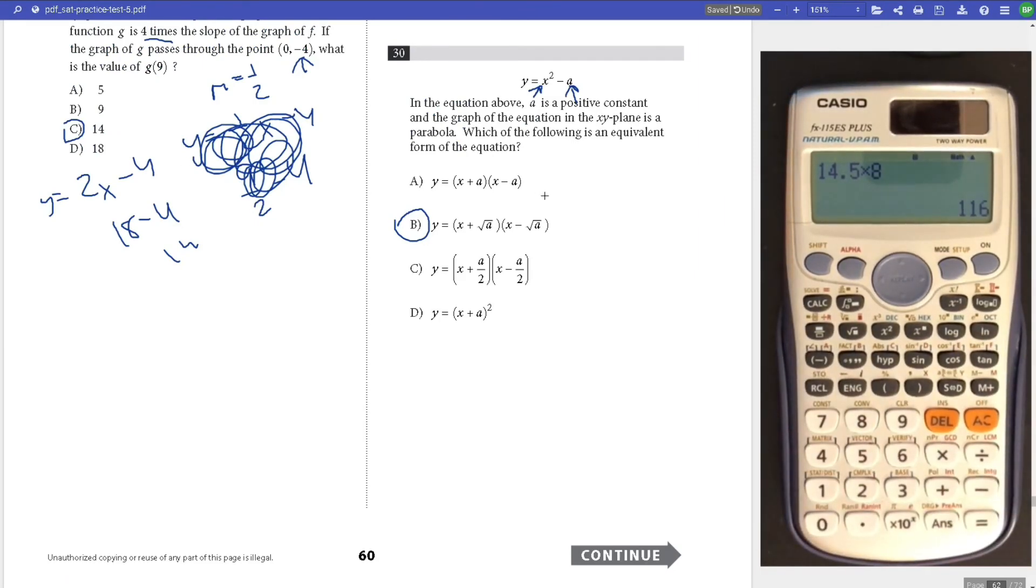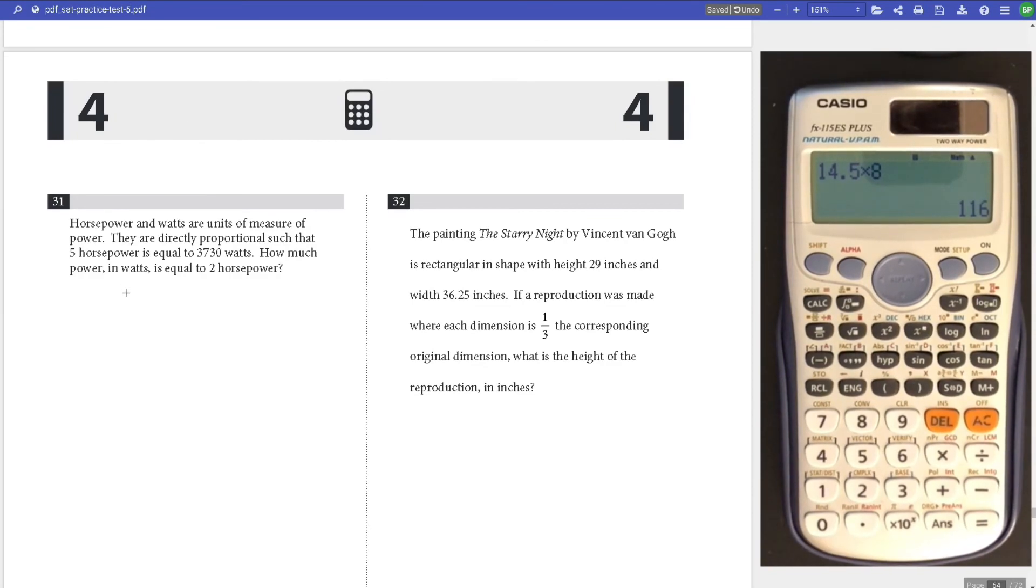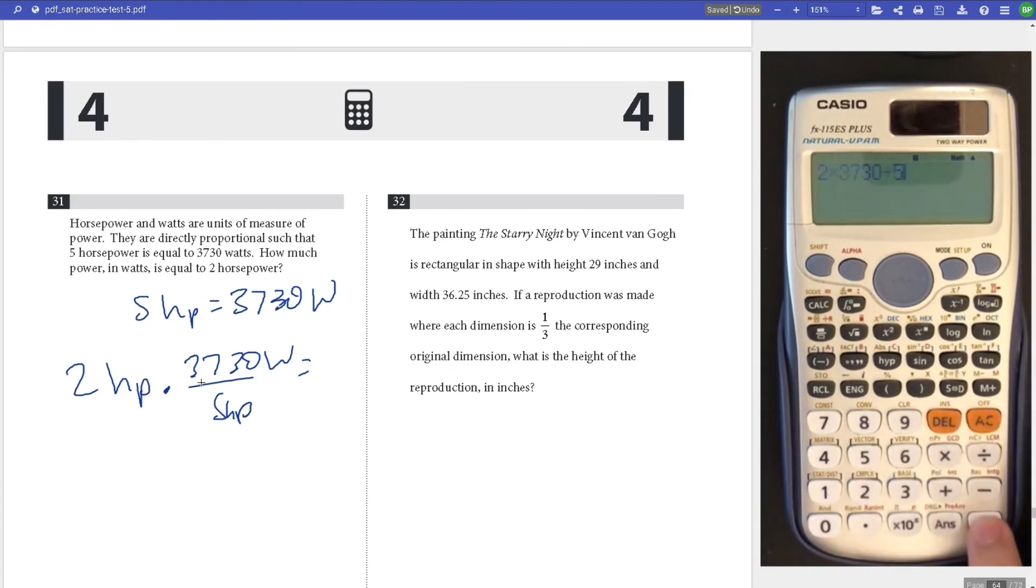Number 31, horsepower is a unit of power, they are directly proportional such that 5 horsepower equals 3,730 watts. How much power in watts is equal to 2 horsepower? We're given 2 horsepower, dimensional analysis, make sure terms cancel out. Multiply 2 times 3,730 divided by 5, get 1,492 watts. That is your answer.